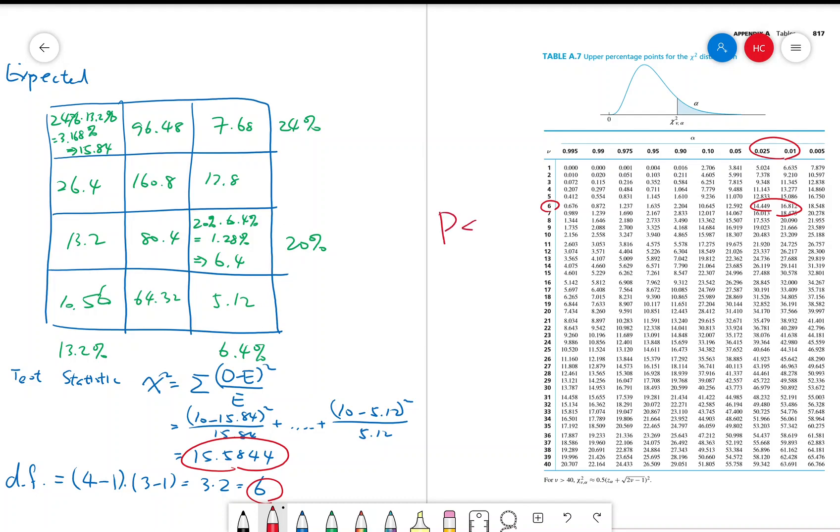So p is between 0.025 and 0.01. In particular, p is less than 0.05, so we can reject H-naught at 5% level and conclude that the rows and columns are dependent.